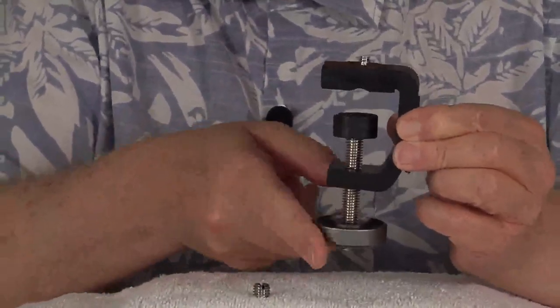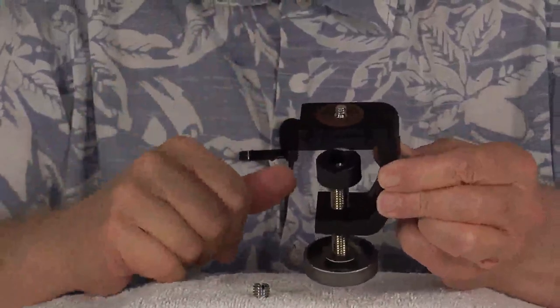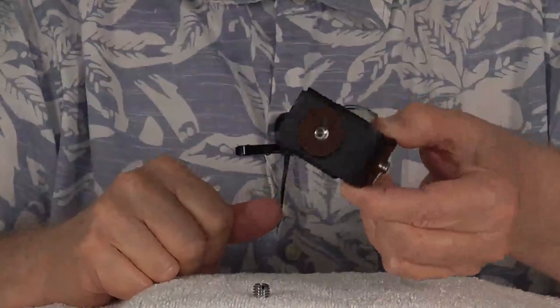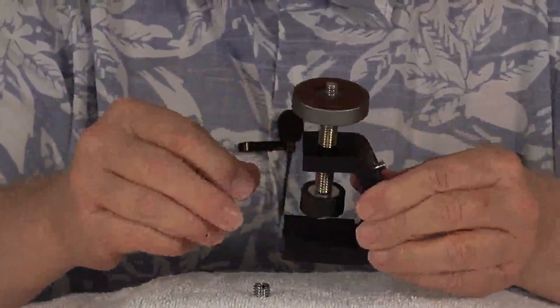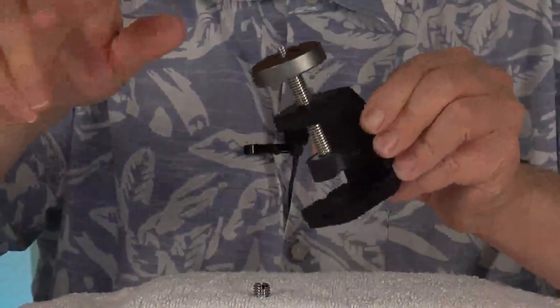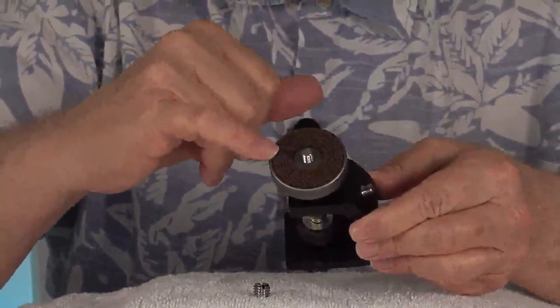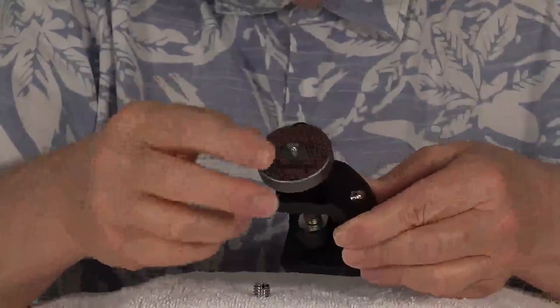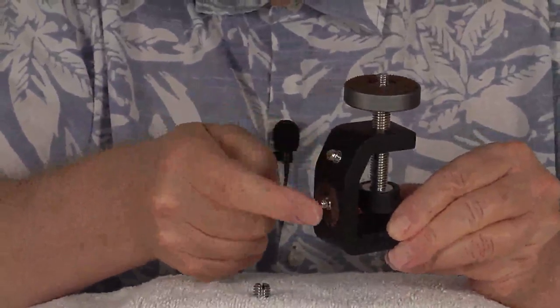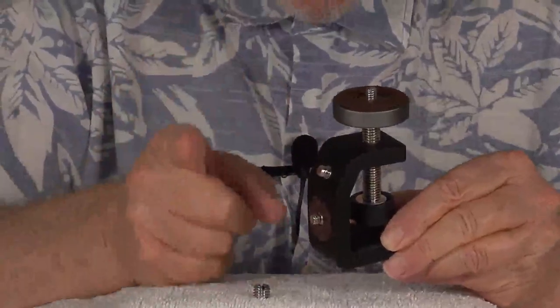You'll notice here, you've got a quarter-twenty thread with a pad, a cushion pad. And then you flip it over to the other side, and after you've clamped down on whatever item you're going to be clamping to, you have another quarter-twenty with a large pad here. In addition to that, you turn it this way, and on the body of the C clamp, you have two quarter-twenties available to mount lighting or whatever else you have.